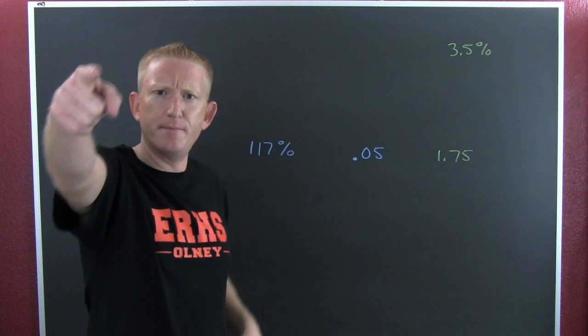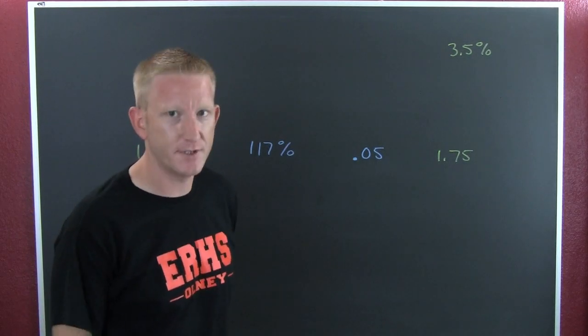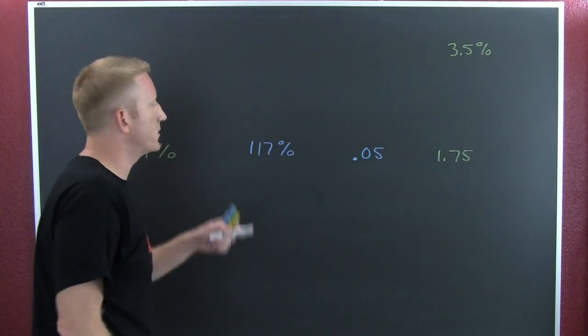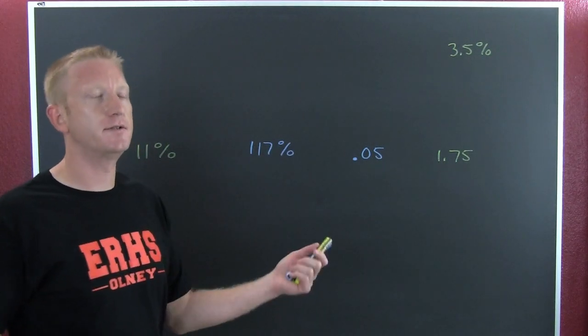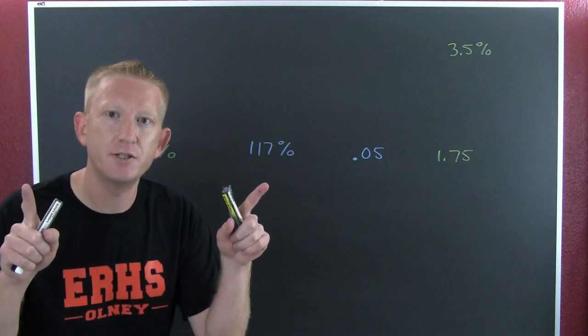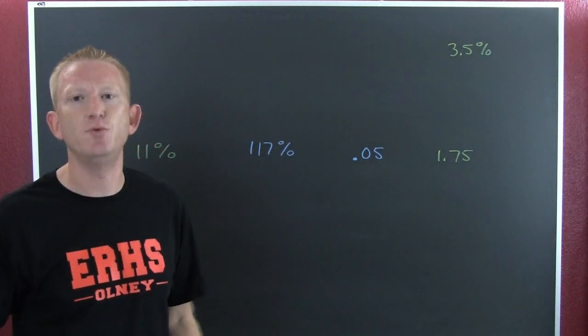Now let's swap decimals for percentages and percentages for decimals. That works. What are we going to do? We're going to convert the two. Why? Because sometimes it's going to go back and forth. But I'm not going to show you the way the book does it. I'm going to show you the way you really do it.